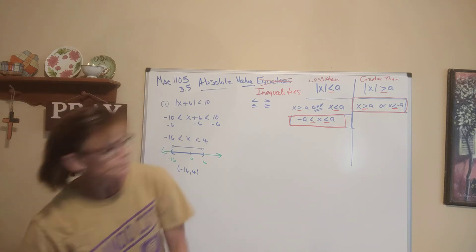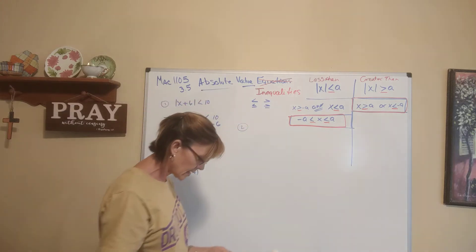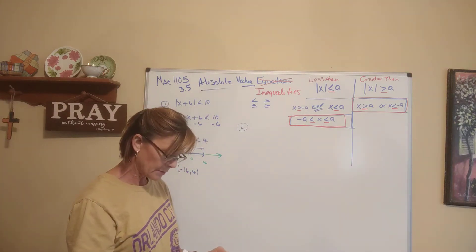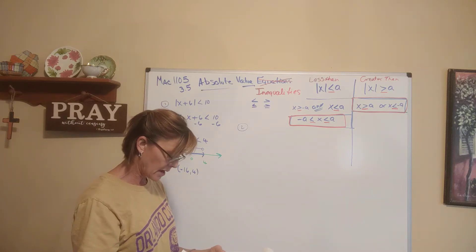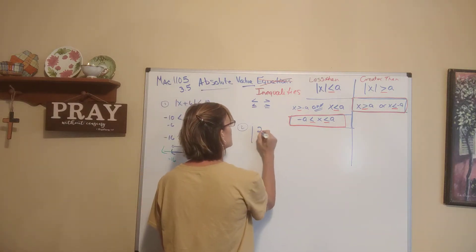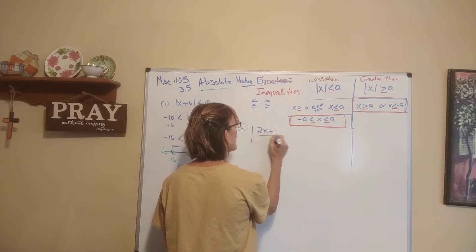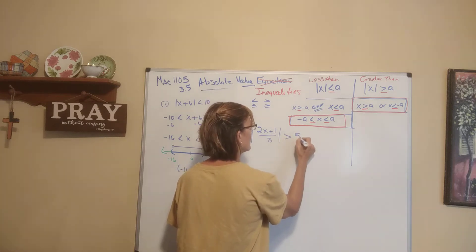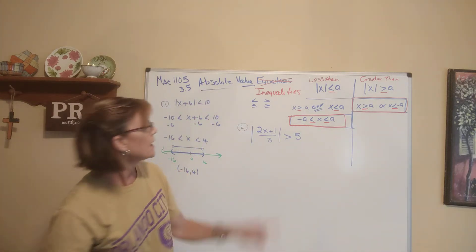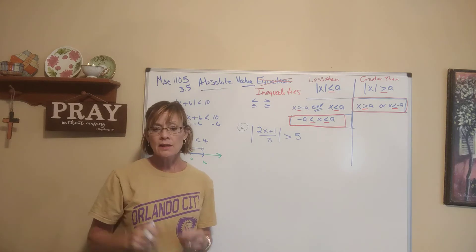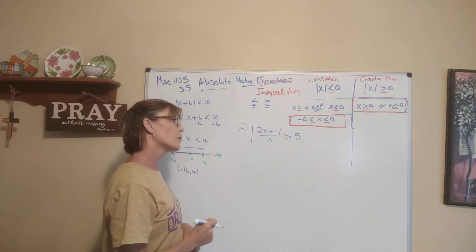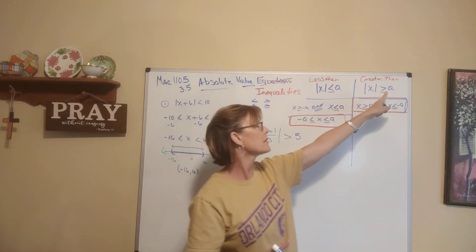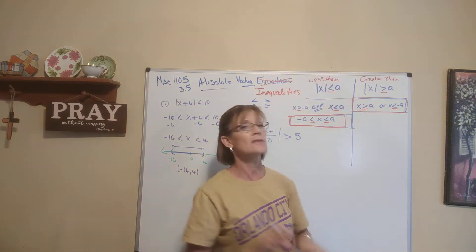Here's example 2. The absolute value of 2x plus 1 over 3 is greater than 5. It came to us isolated — the absolute value expression is isolated on one side by itself. This is greater than, so I go to the greater than side and apply that rule, which gives me two statements.